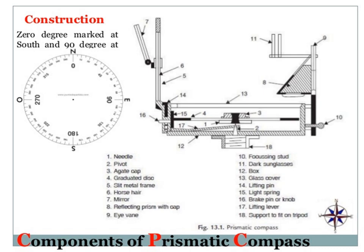This is the sketch showing the construction of the prismatic compass. Considering the different parts: the box is circular and generally 8 to 10 cm in diameter. At the center of the box there is a pivot, which is provided to suspend the magnetic needle over it, and over that there is a graduated disk. The graduated disk has a graduation ranging from 0 to 360 degrees and is attached to the magnetic needle.